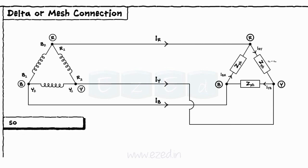In case of a delta connection also, the phase voltages are equal in magnitude and 120 degrees apart from each other.